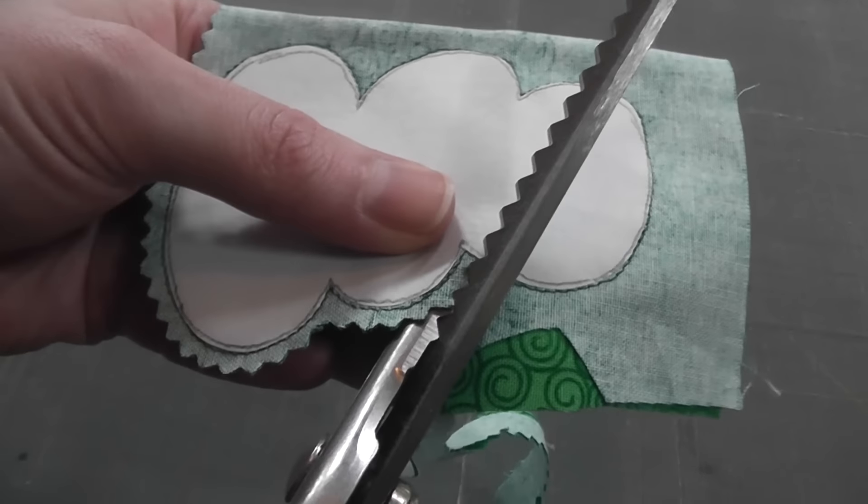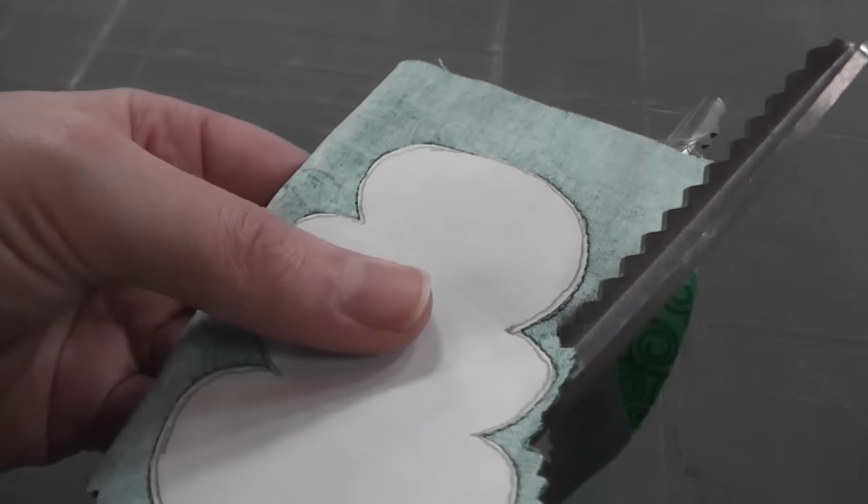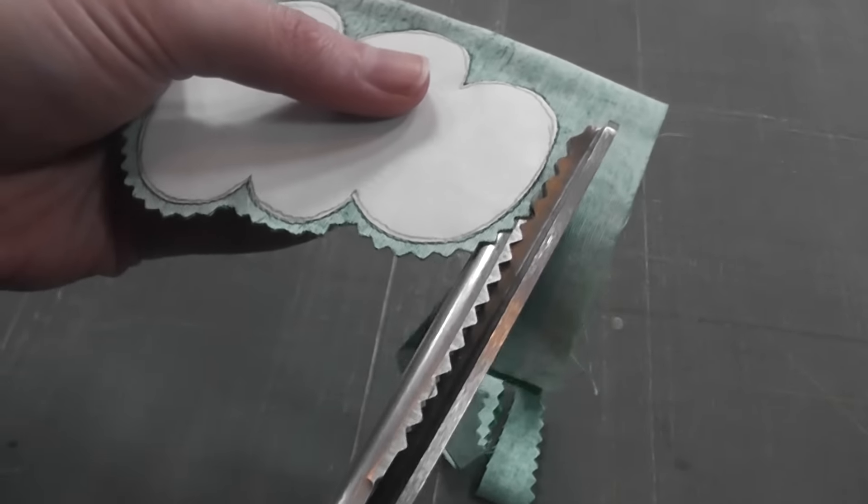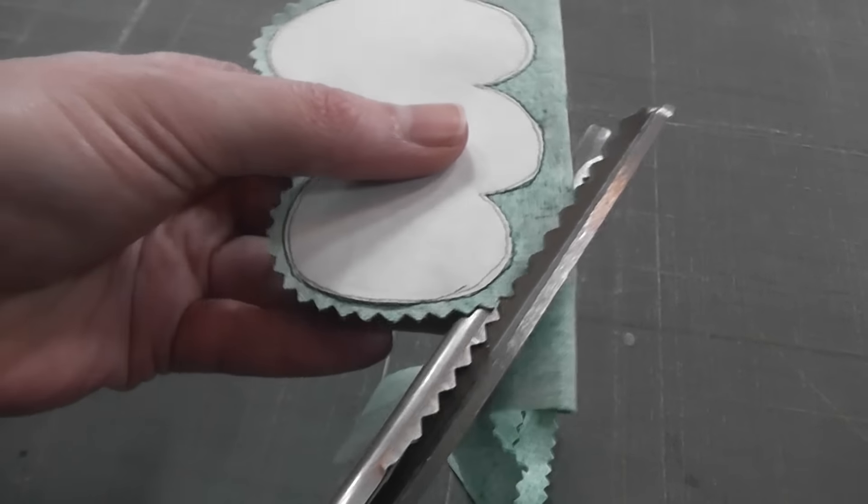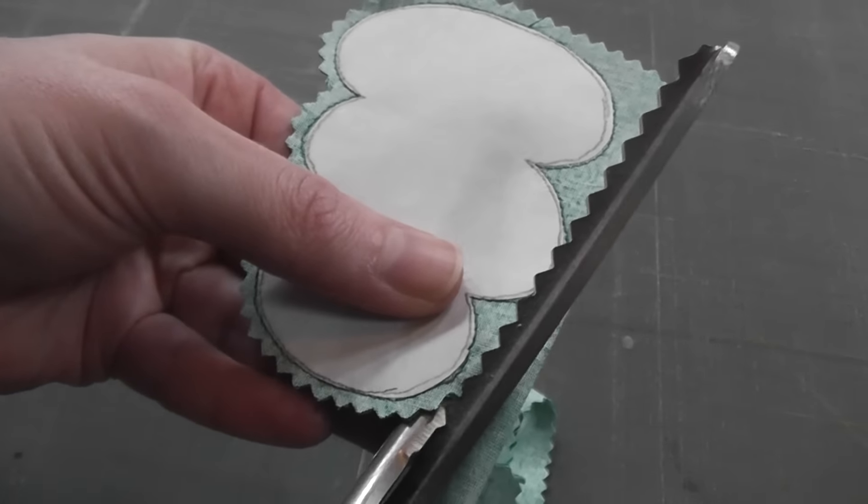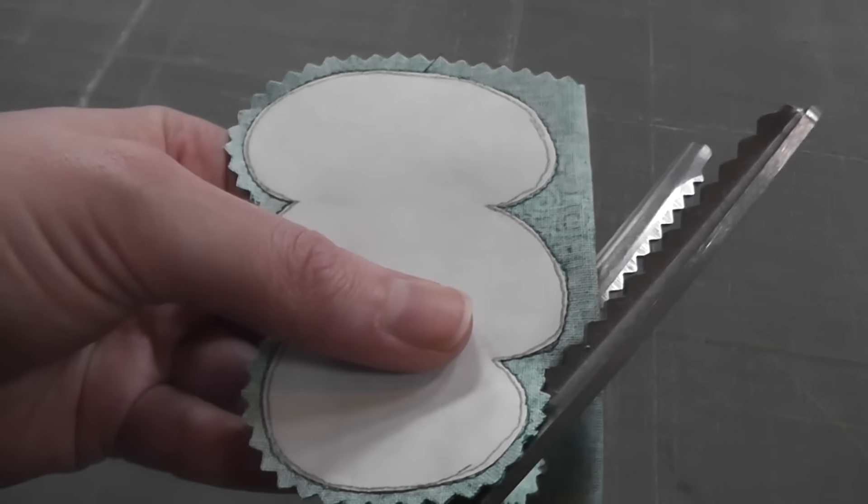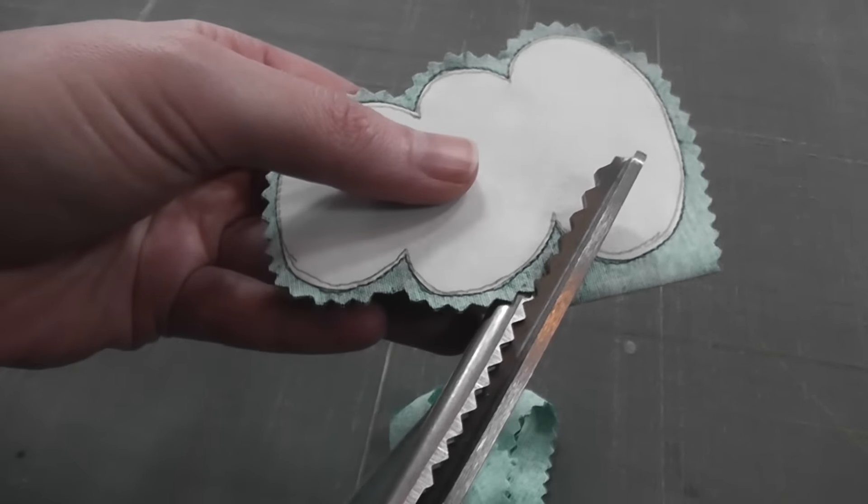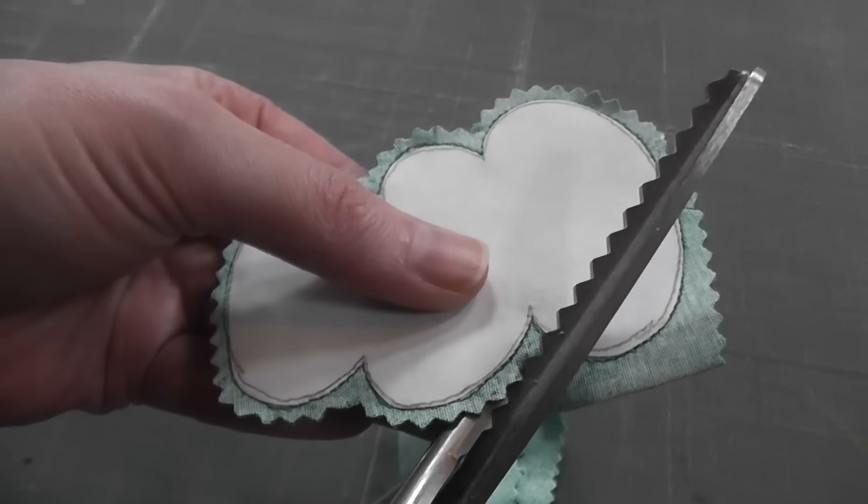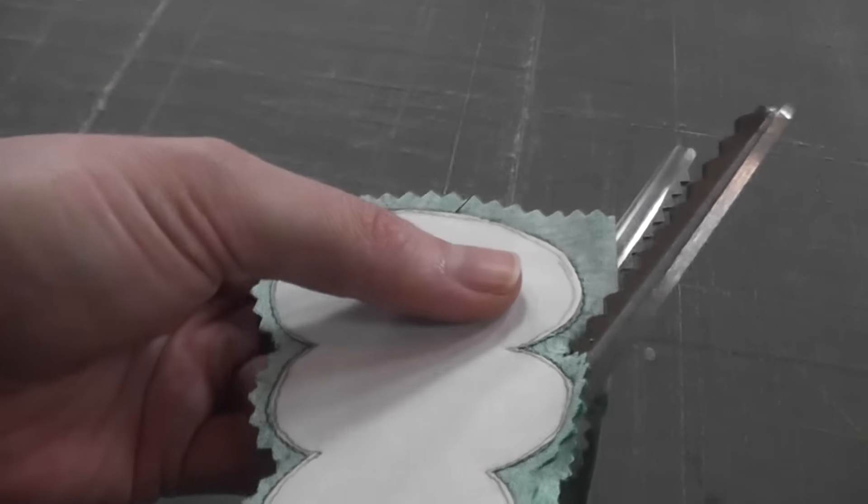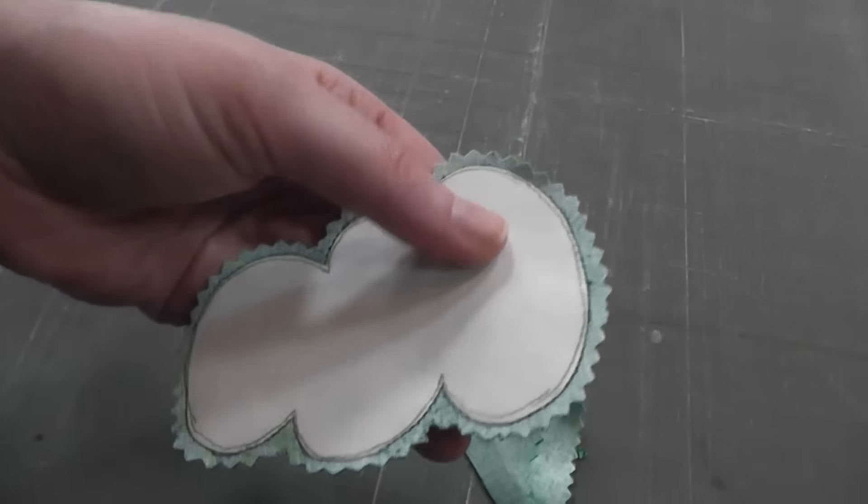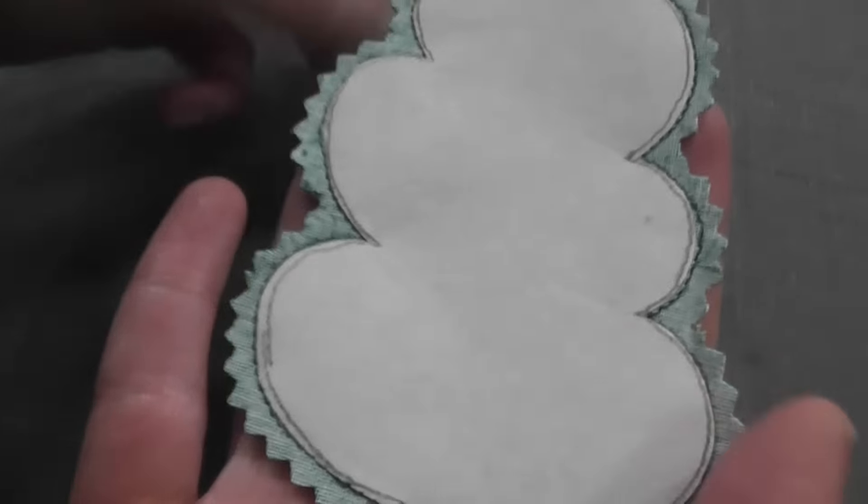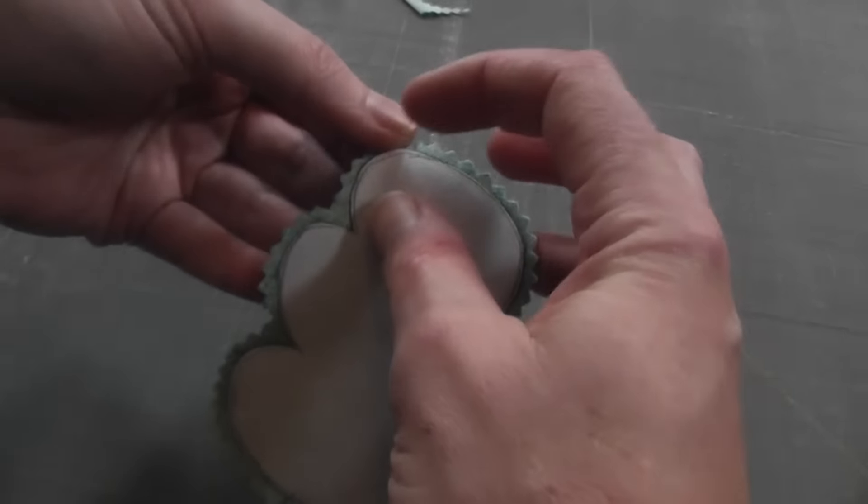I like to use pinking shears because it's going to help me minimize bulk. But you do not want to get too close to that edge. You're actually going to put a fair bit of stress on this piece turning it, smoothing it, stuffing it. And even with that very small stitch length, it's going to tend to be pretty strong. I don't want to take any risks of poking through my stitching there. So I'm not going to trim this right to the stitching line, just trim away a lot of excess bulk.